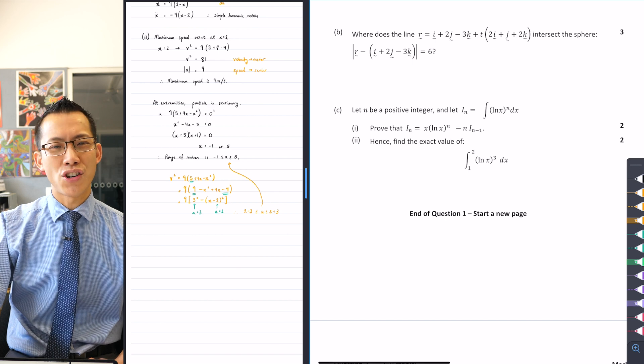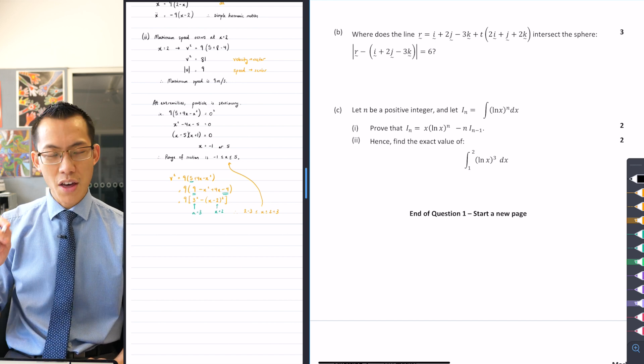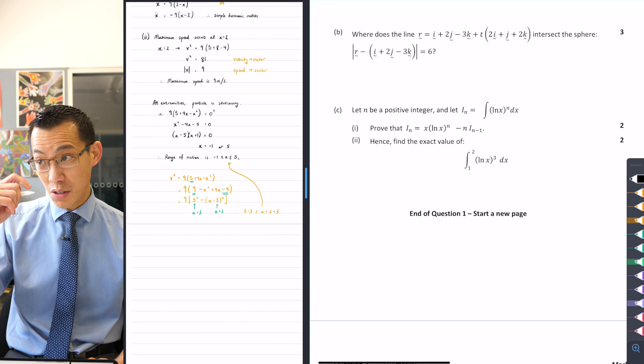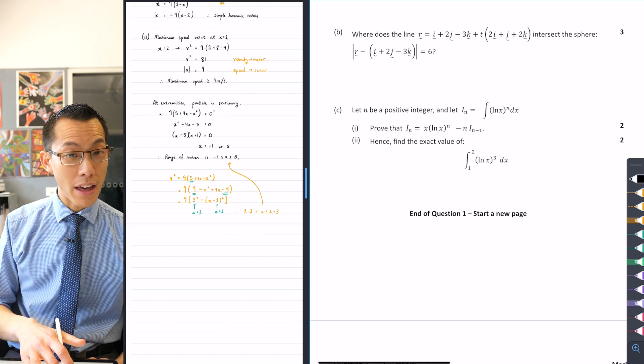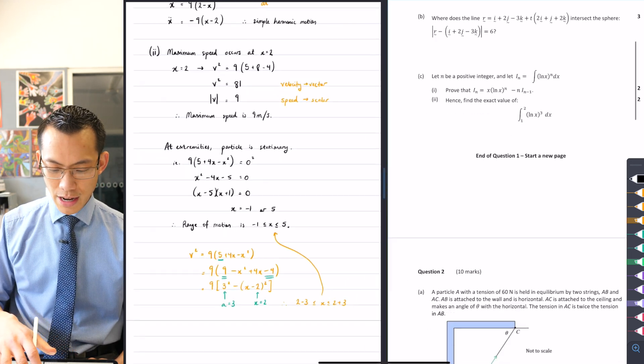We're trying to find points of intersection, and just like in two dimensions, the way that you find points of intersection is to solve simultaneously. It's not that complicated. So let's have a go at doing that together.